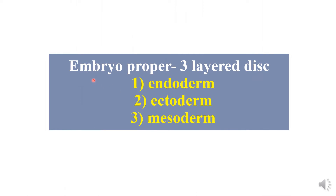To begin with, the embryo proper is a three-layer disc. Ectoderm, endoderm, and mesoderm — these three layers give rise to the different parts of our body. Let's see how these three layers are formed.